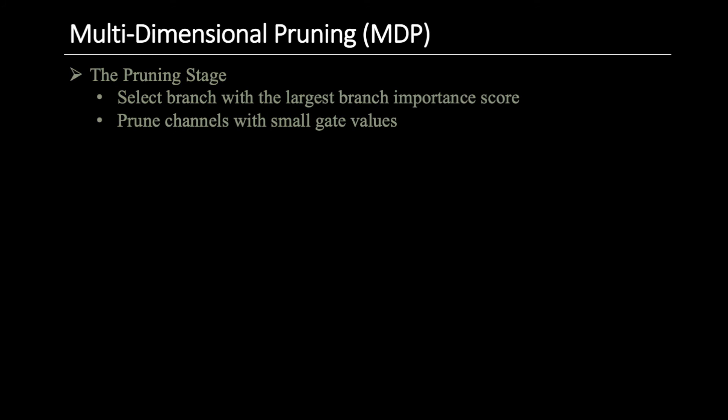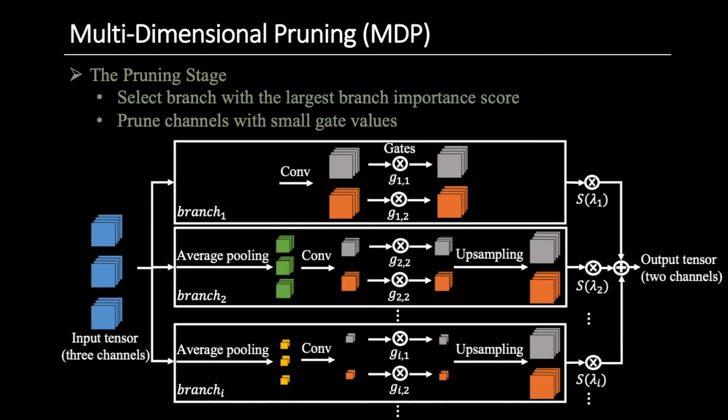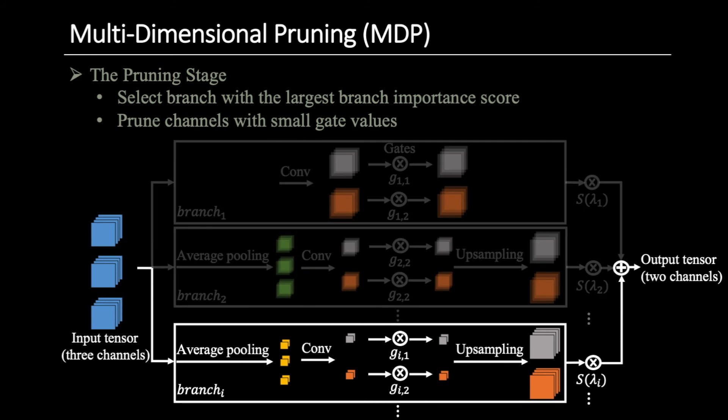After finishing training, we prune the network in the pruning stage. We only select one branch with the largest importance score in each layer. We also prune channels with small gate values in this branch. After pruning, we fine-tune the network to recover from the accuracy drop.